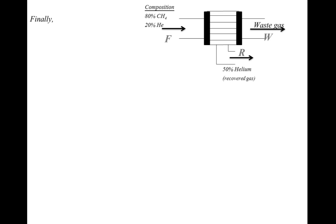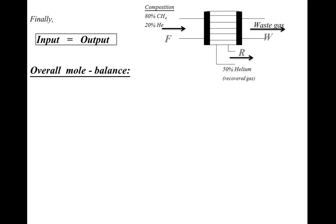Our material balance relation is input minus output equal to zero, so input equals output. In the input we have F (feed), and in the output we have two streams: waste (W) and recover (R). So our first equation is F = W + R.